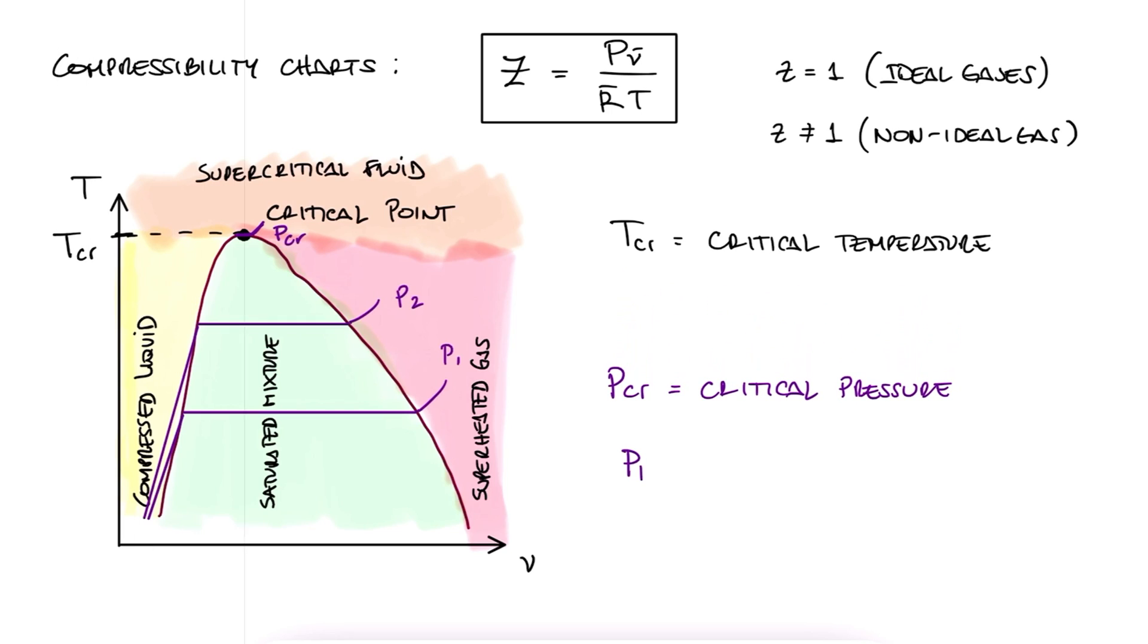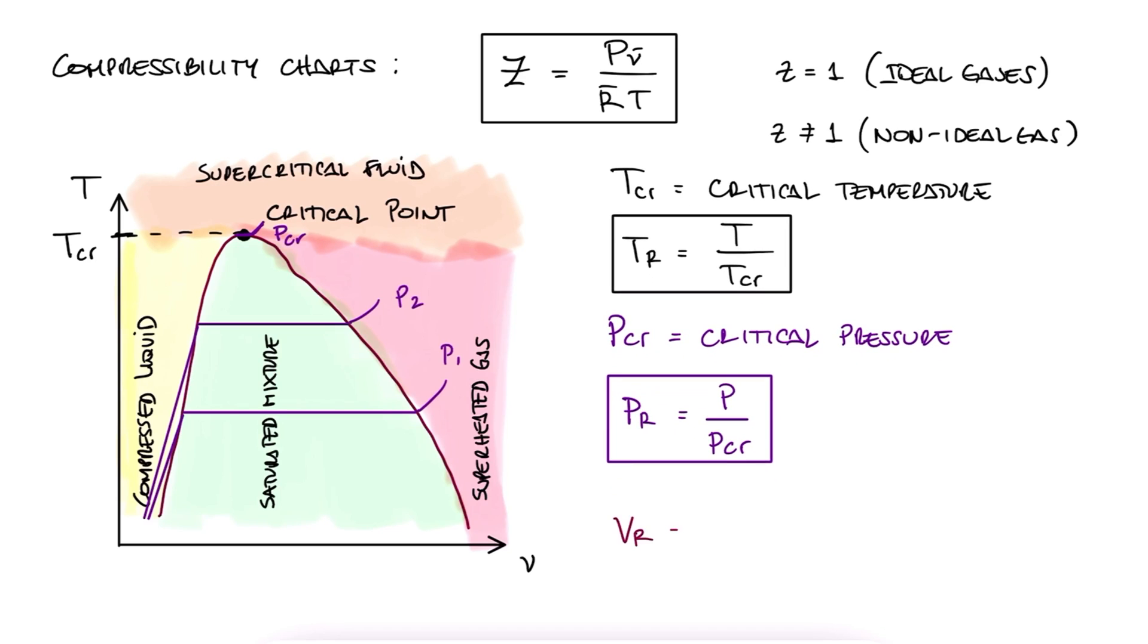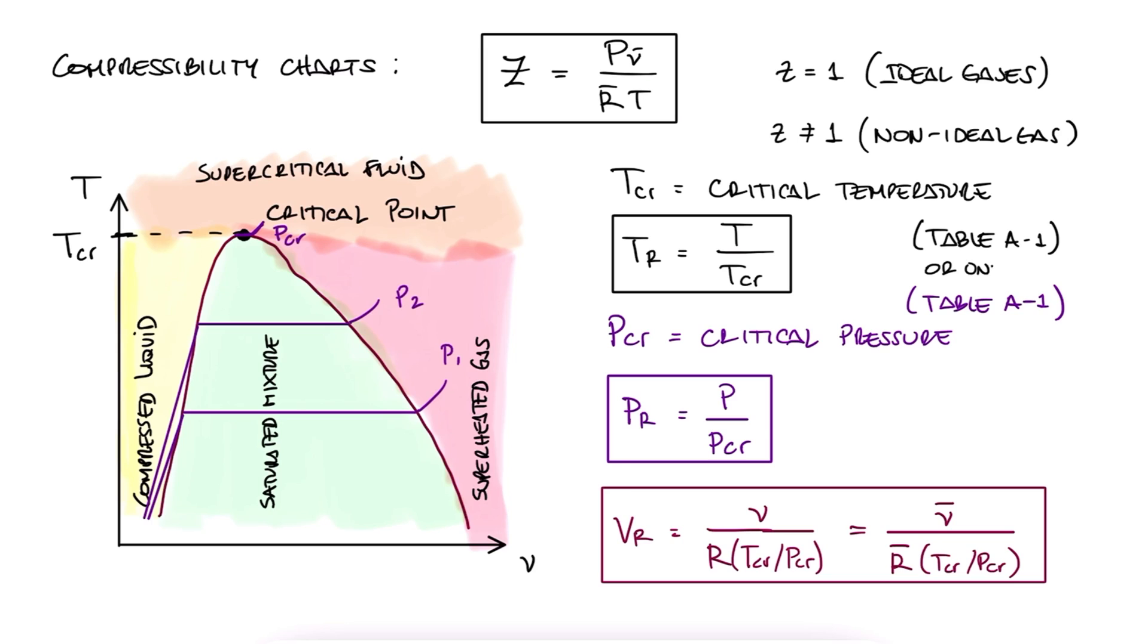Reduced pressure is defined as the current pressure divided by critical pressure. Reduced temperature is defined as the current temperature divided by the critical temperature. And finally, reduced volume is equal to the current specific volume over R times critical T over critical P. It can be either V over R or V bar over R bar. The values for the critical pressure and the critical temperature are found in a thermodynamics table, either your textbook or just look it up online.